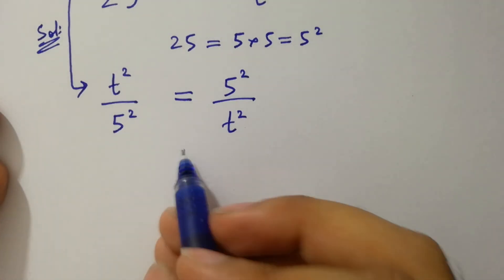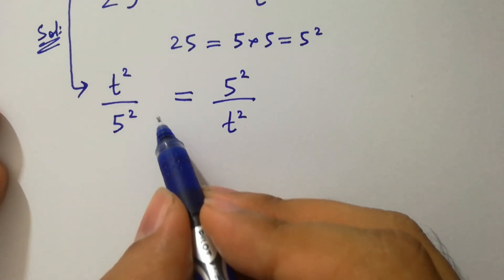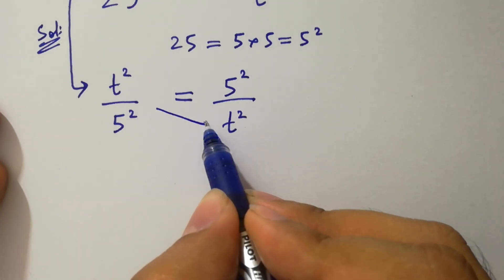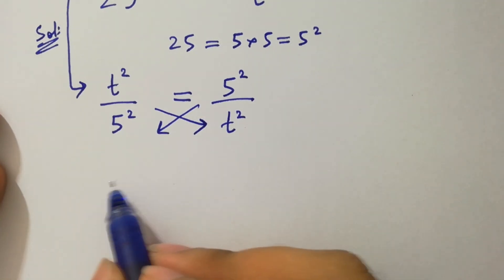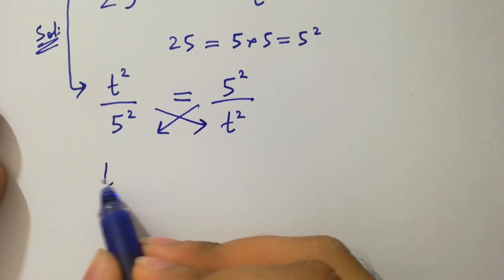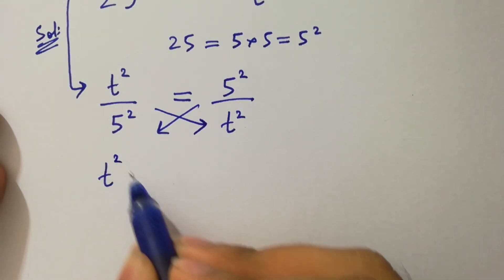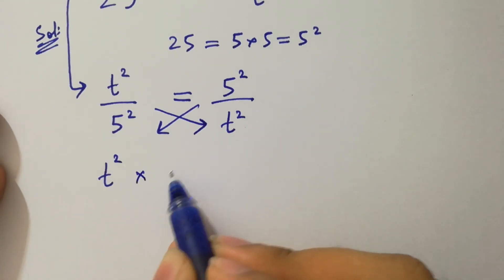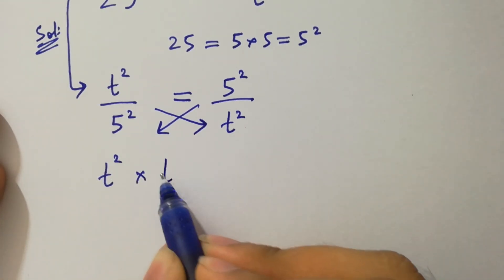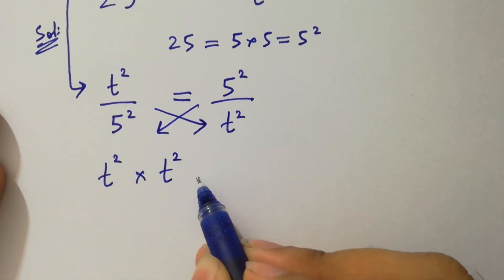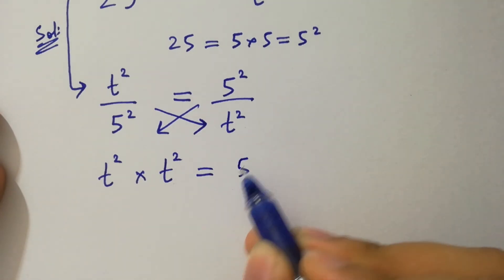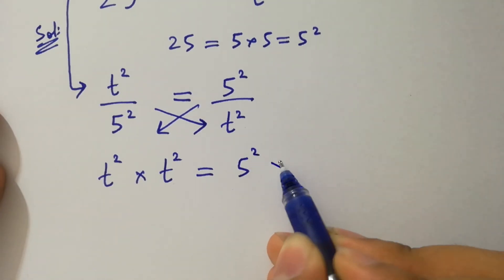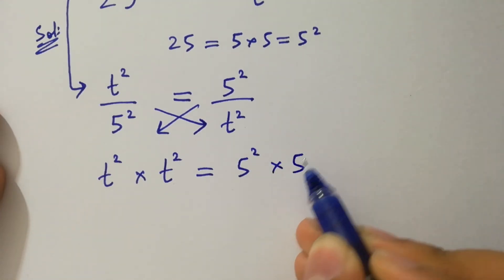By cross multiplication, we have t squared times t squared equal to 5 squared times 5 squared.